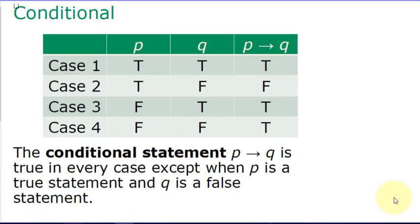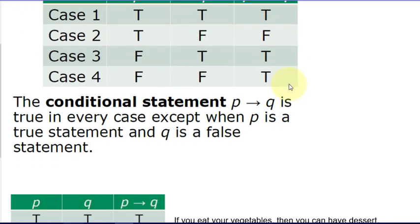Next, the truth table for the conditional. We have four cases where P and Q might each be true or false, and we list the truth value of the conditional in each case. P arrow Q — another way to say that is 'P implies Q.' P implies Q is true in every case except case 2, when P is true and Q is false. Every other case, it's true. Let's look at an example to explain this.